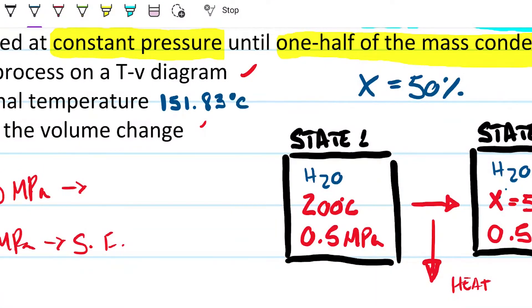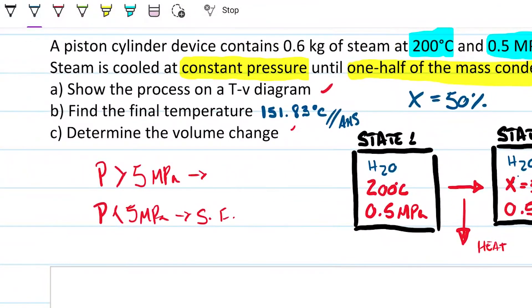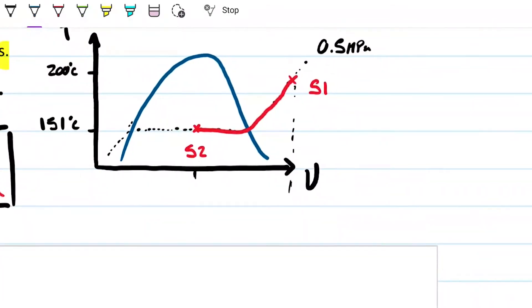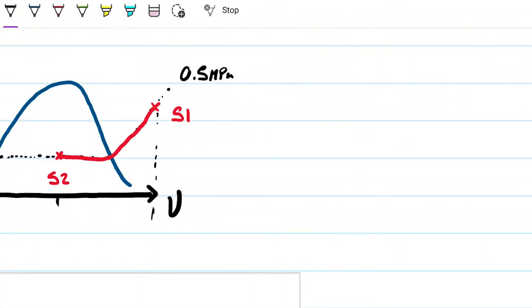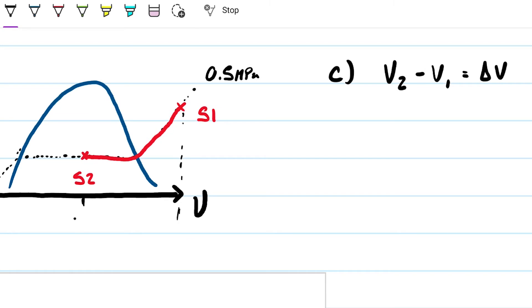And then finally, what is the volume change? So to be able to find a volume change, I need to relate that to my specific volume. What we want to determine on part C is what is V2 minus V1, which is the delta V. Well, we know already that my V2 is smaller than my V1. If you look at the graph that tells us that. So this is going to be a negative number.